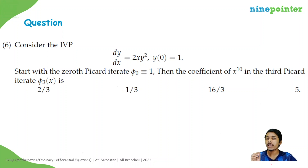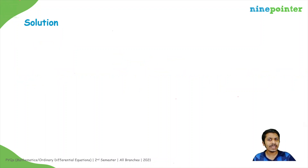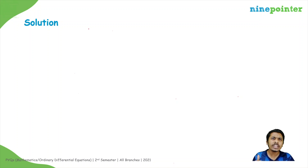Here we are given a first order differential equation which we have to solve — not really using Picard iterate fully, but we have to find the third Picard iterate and then find the coefficient of x raised to 10 in that. Picard iteration is an iterative method which helps us solve any first order differential equation; it need not be linear.